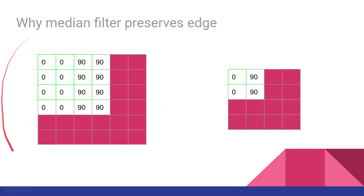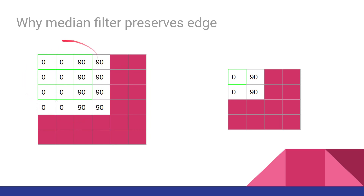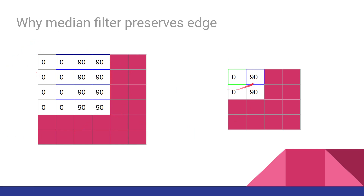Now let's see how the median filter preserves edges. In this example we have an image with zeros and 90s, so there is an edge in the image. When we apply a median filter to this 3×3 matrix, the window containing six zeros gives an output of 0, and the window containing six 90s gives an output of 90, so the edge is preserved at the same intensity.